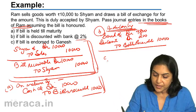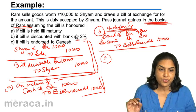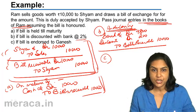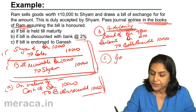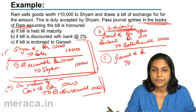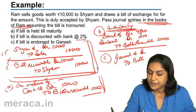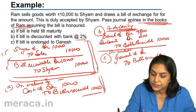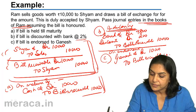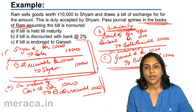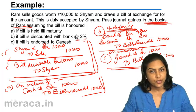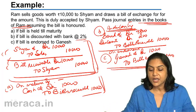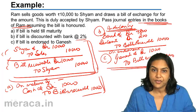For option C, the first two entries of the sale and receipt of bill remain the same. The bill is endorsed to Ganesh — the bill is transferred to Ganesh. Entry would be Ganesh's account debit to bills receivable, Rs. 10,000. On maturity, there would be no entry, since Ganesh will present the bill to Shyam and Shyam will honor the bill. The transaction is between Ganesh and Shyam and there is no entry in the books of Ram.